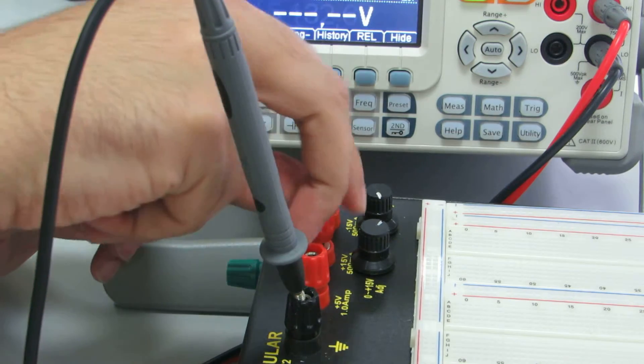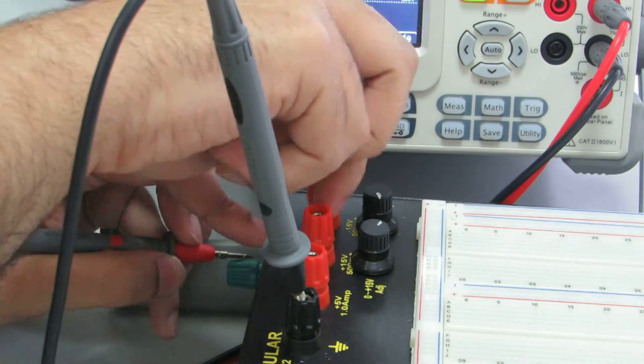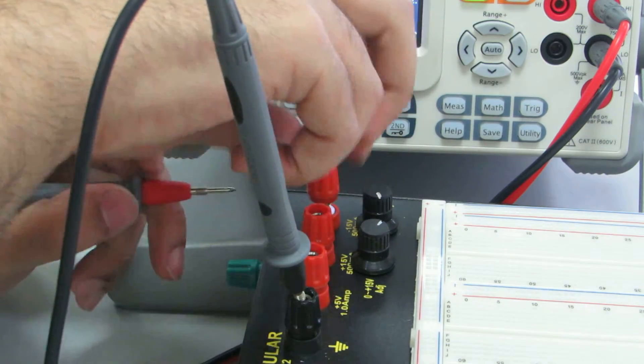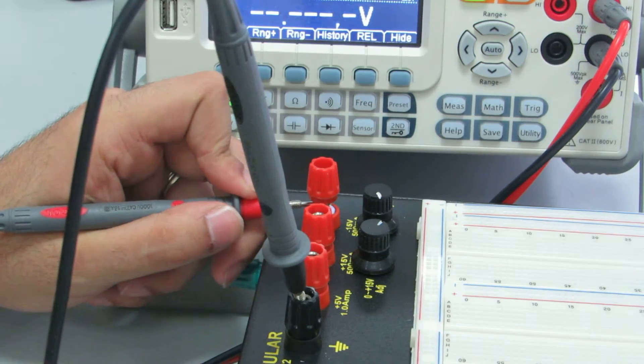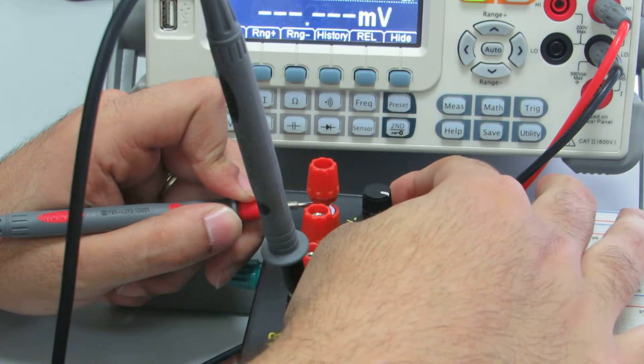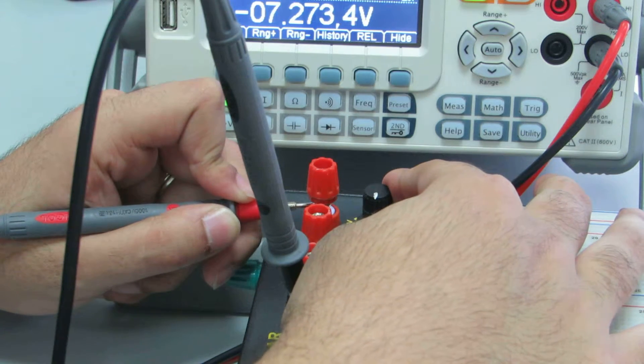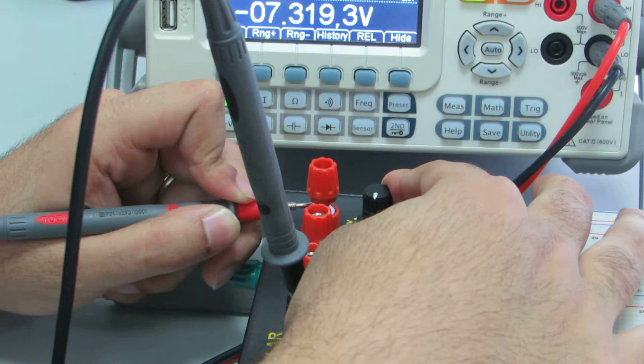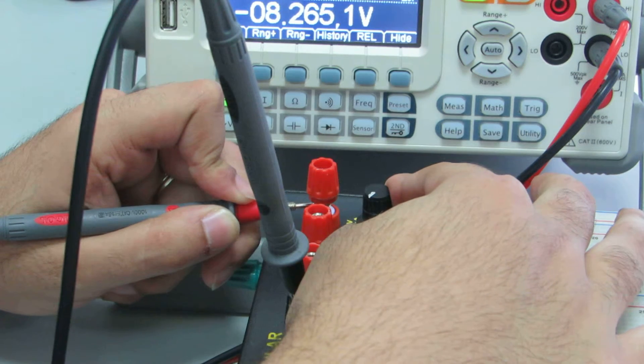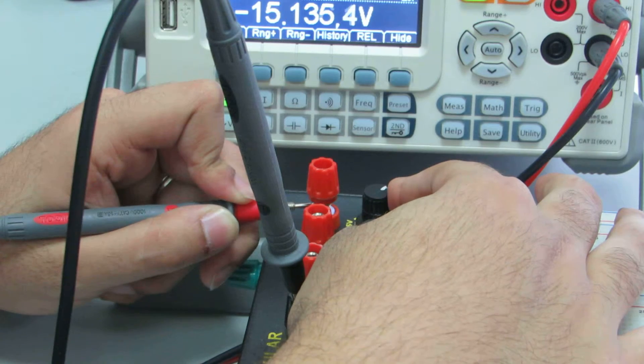Now let's scroll this one back and go to the negative. If you move the negative sides here, you can see we have minus 7.23689 and up to minus 15 volts.